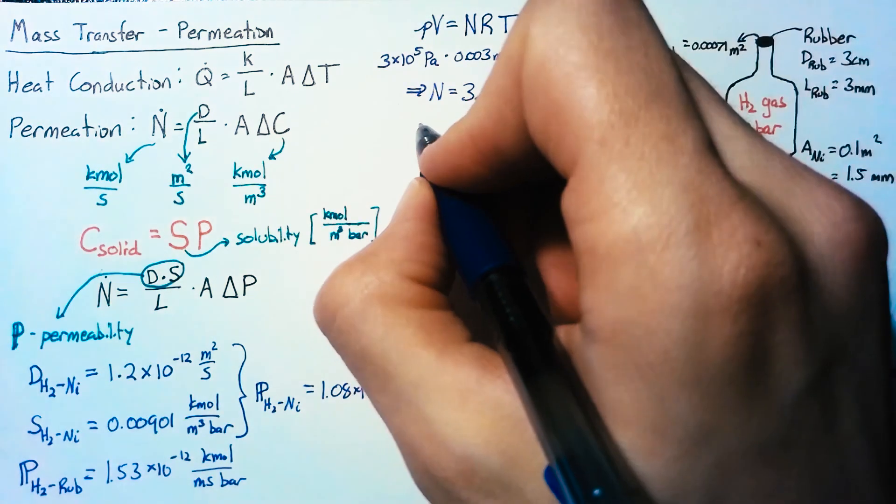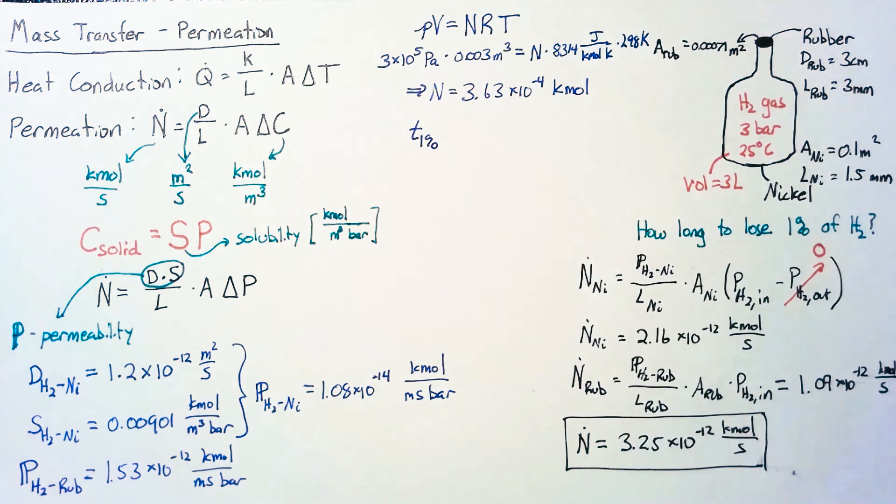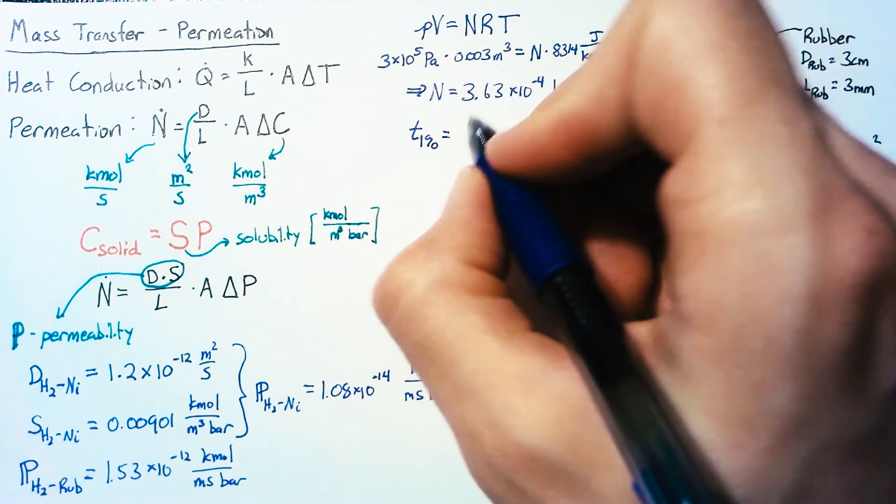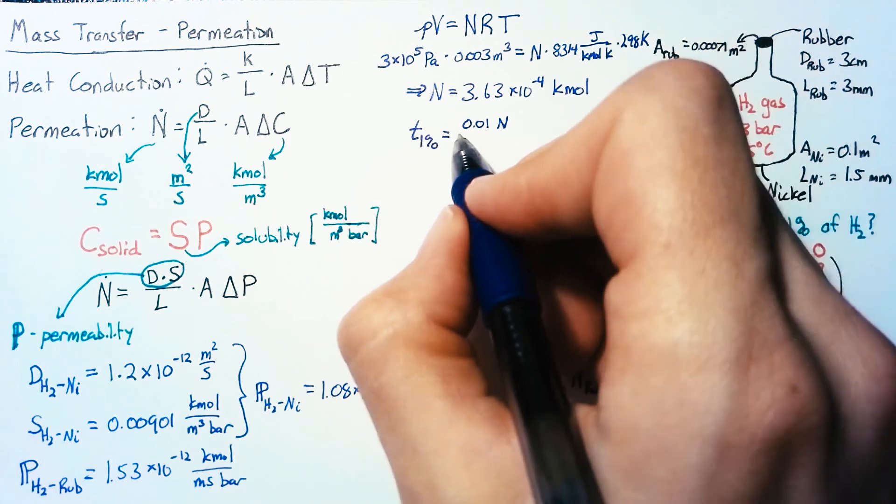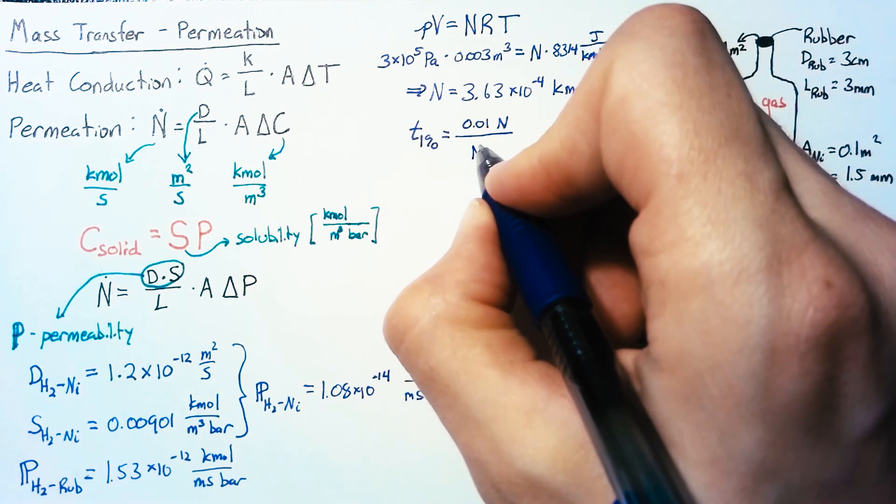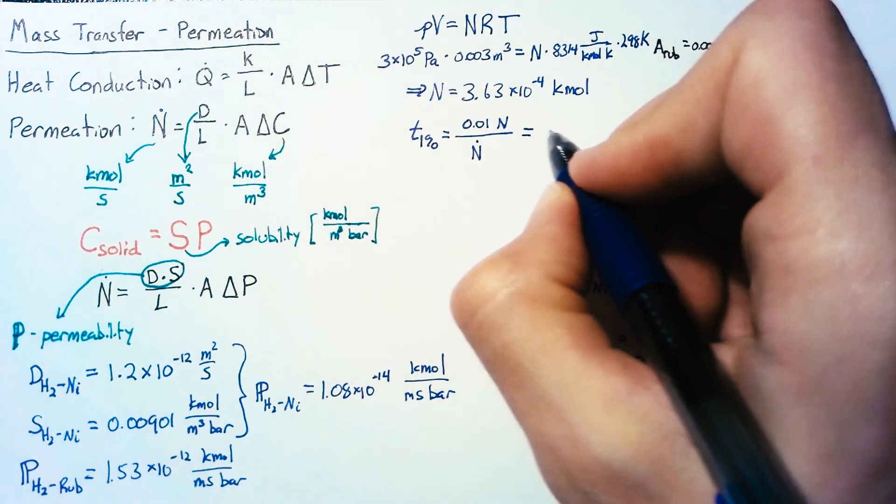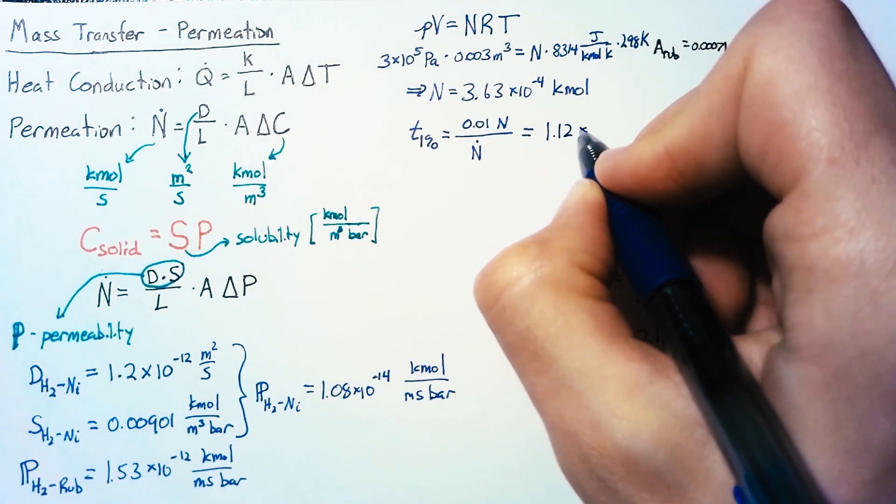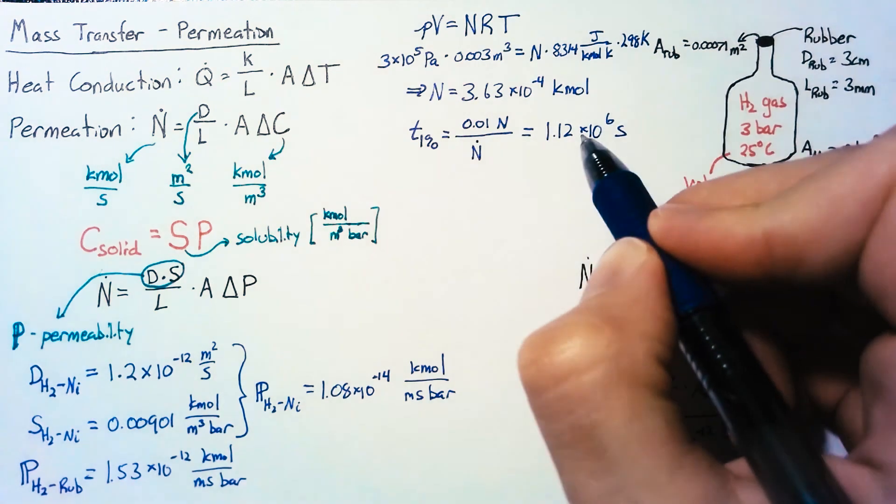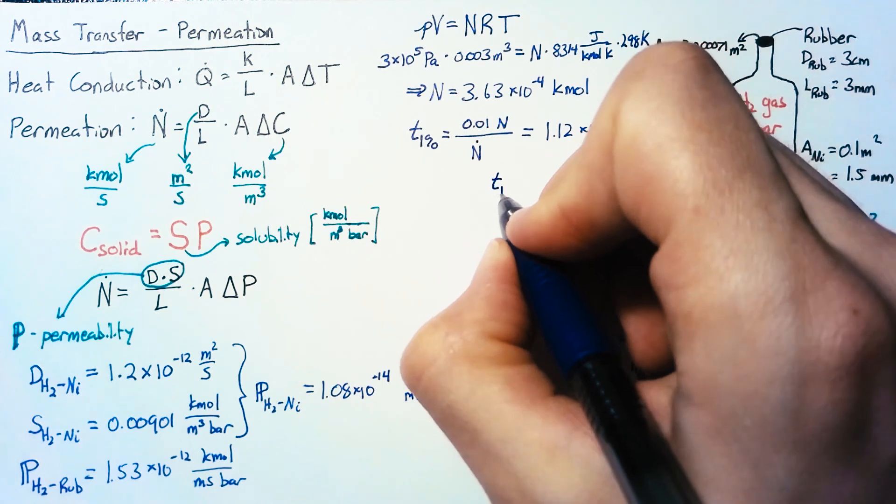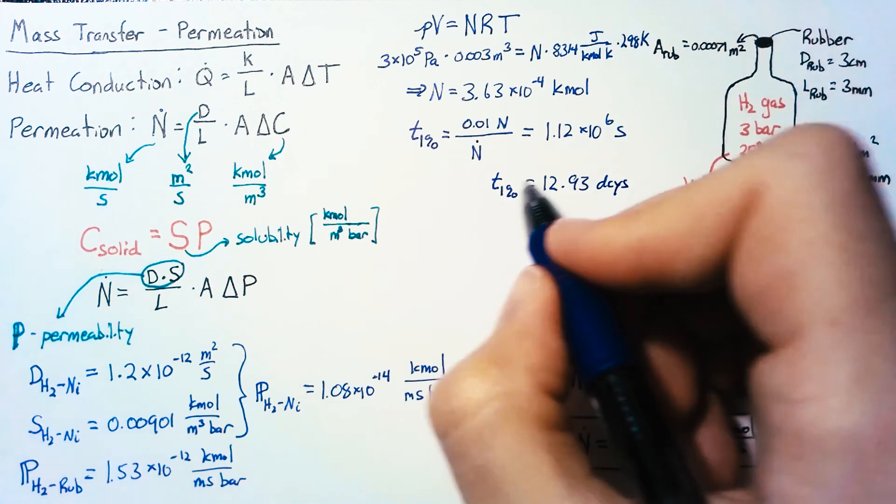To find the time it takes to lose 1% of our hydrogen, we simply take 1% of our number of moles and divide by the molar flow rate out of the flask. This gives us 1.12 × 10⁶ seconds. However, this is inconvenient, so instead we'll say the time to lose 1% is 12.93 days.